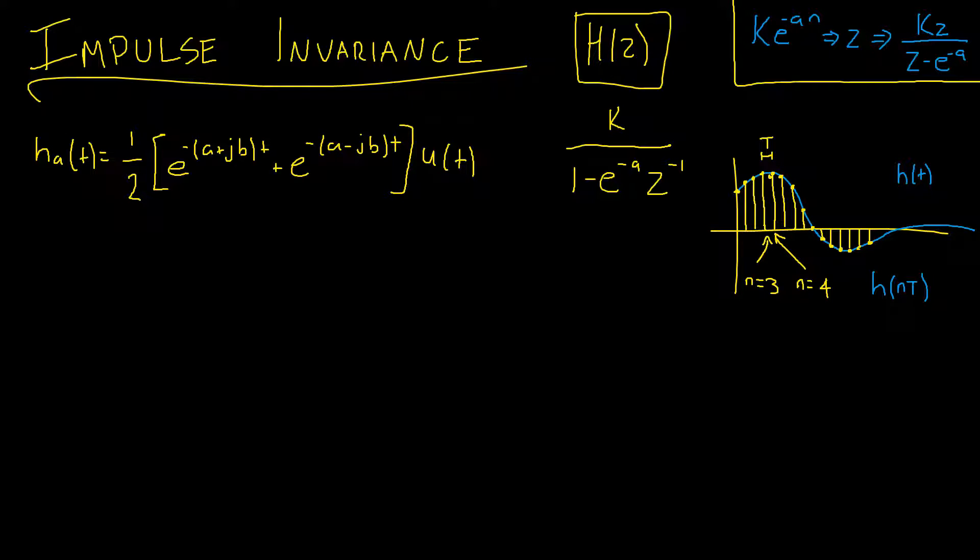Before we get started, there's a few things I'd like to point out. Firstly, we're given a Z transform in the top right hand corner here. Now this is often the case for an impulse invariance question, and the first step prior to implementing the impulse invariance itself is to get the analog filter into a form where you can take the inverse Z transform.